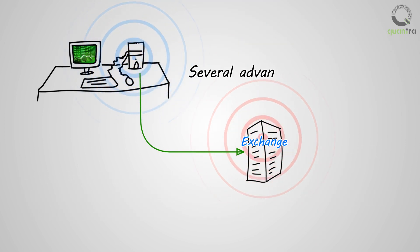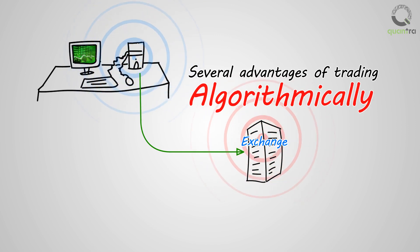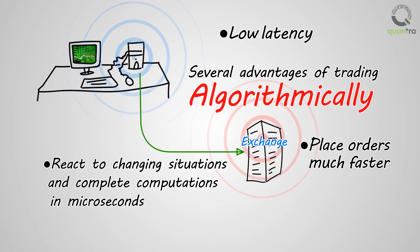There are several advantages of trading algorithmically. Automated systems provide low latency as they can perform computations and place orders much faster. They are designed to react to changing situations and complete computations in microseconds, which is much faster than a manual trader.